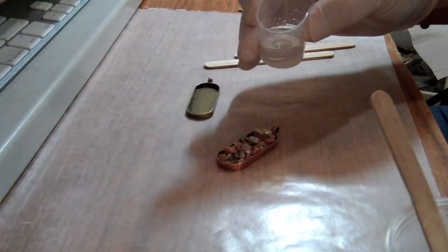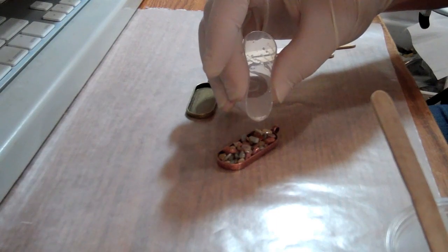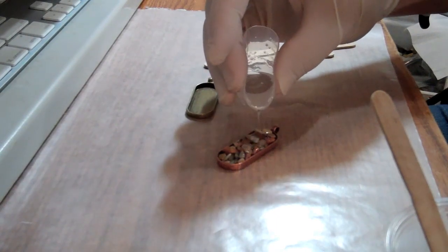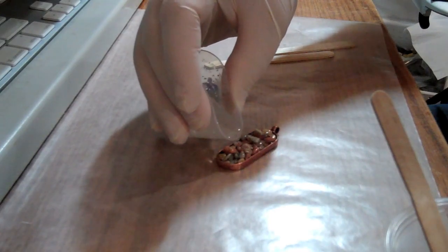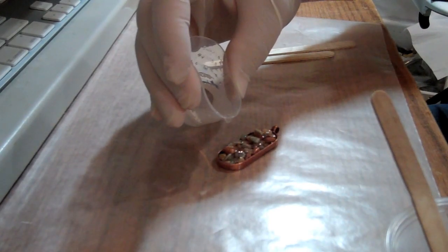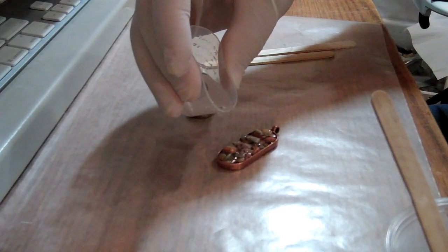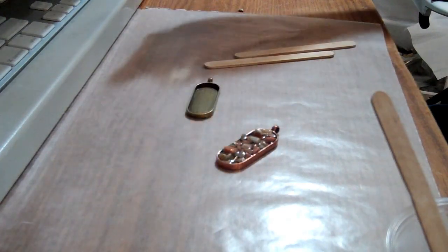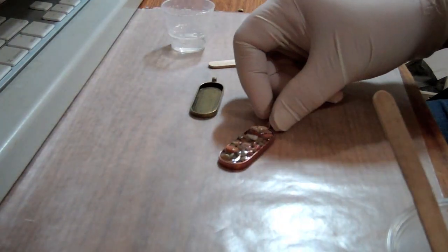And then what I'm going to do is take our epoxy and just add a little bit more epoxy. And this is to act as a glue and a sealant. This is where it could get a little tricky because you don't want to add enough to where it overflows.